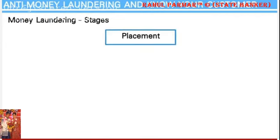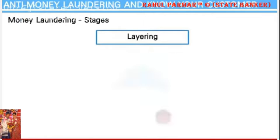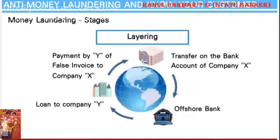Placement: The goal in this stage is to deposit criminal proceeds, generally cash, into a bank account at home or abroad. Layering: The goal in this stage is to cover the criminal origin of the money by frequently transferring and splitting funds between bank accounts, countries, individuals, or corporations to create complex transactions that are difficult to audit.